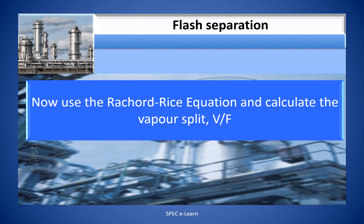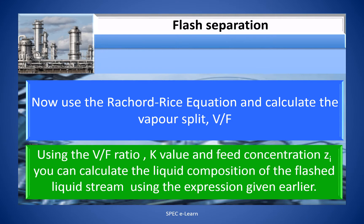Now use the Rachford-Rice equation and calculate the vapor split V/F. Using the V/F ratio, K values and feed concentration Z_i, you can calculate the liquid composition of the flash liquid stream using the expression given earlier.